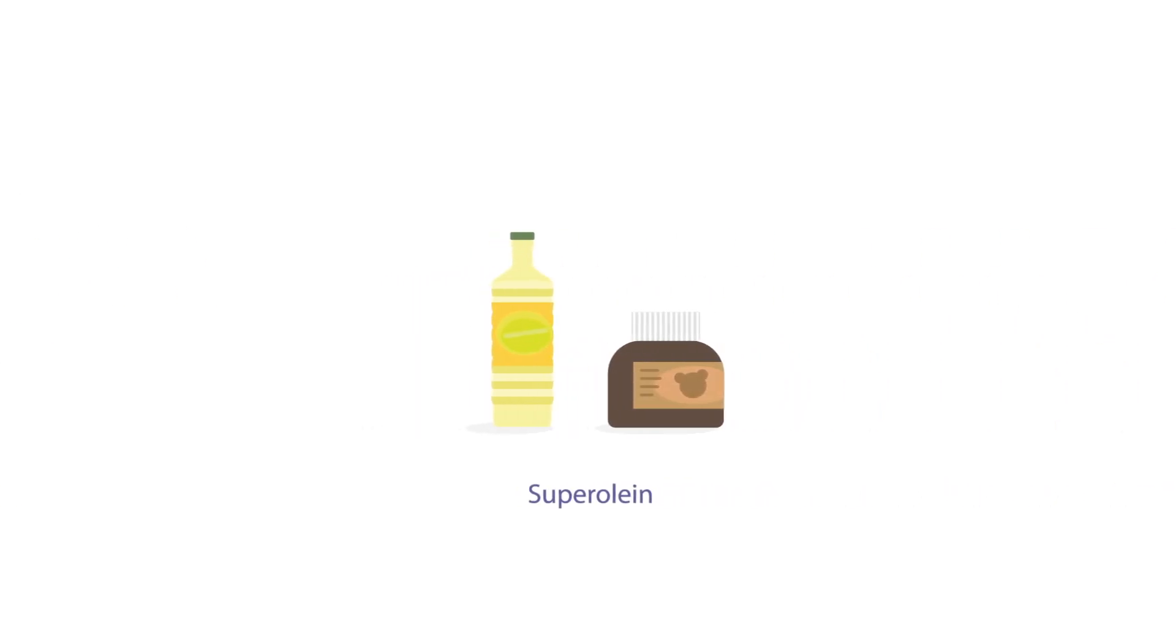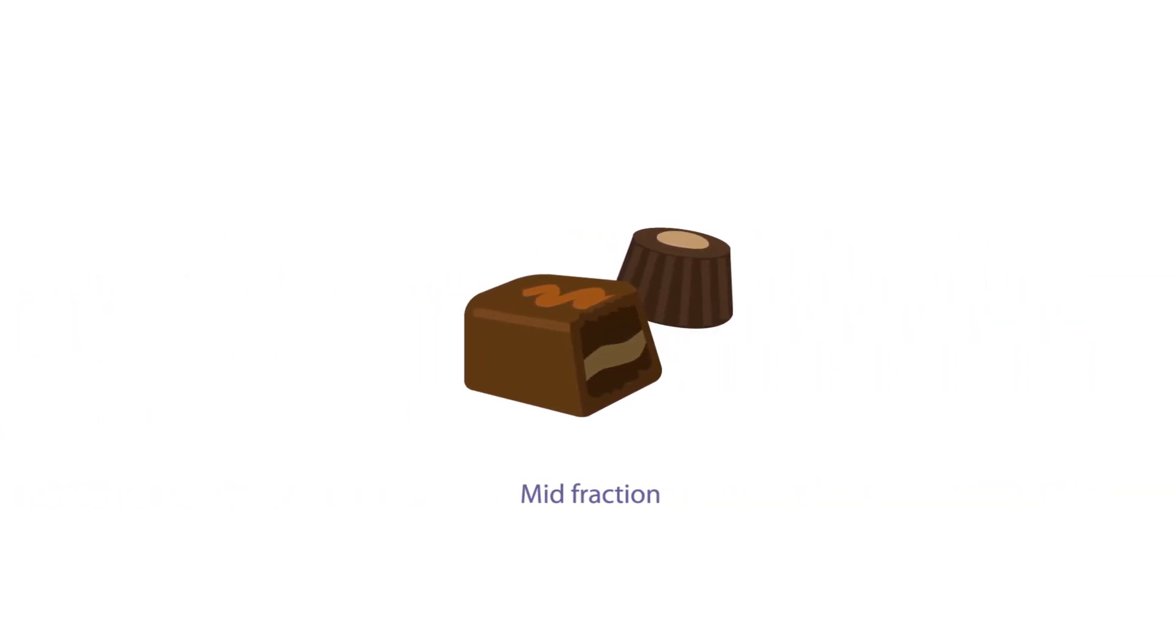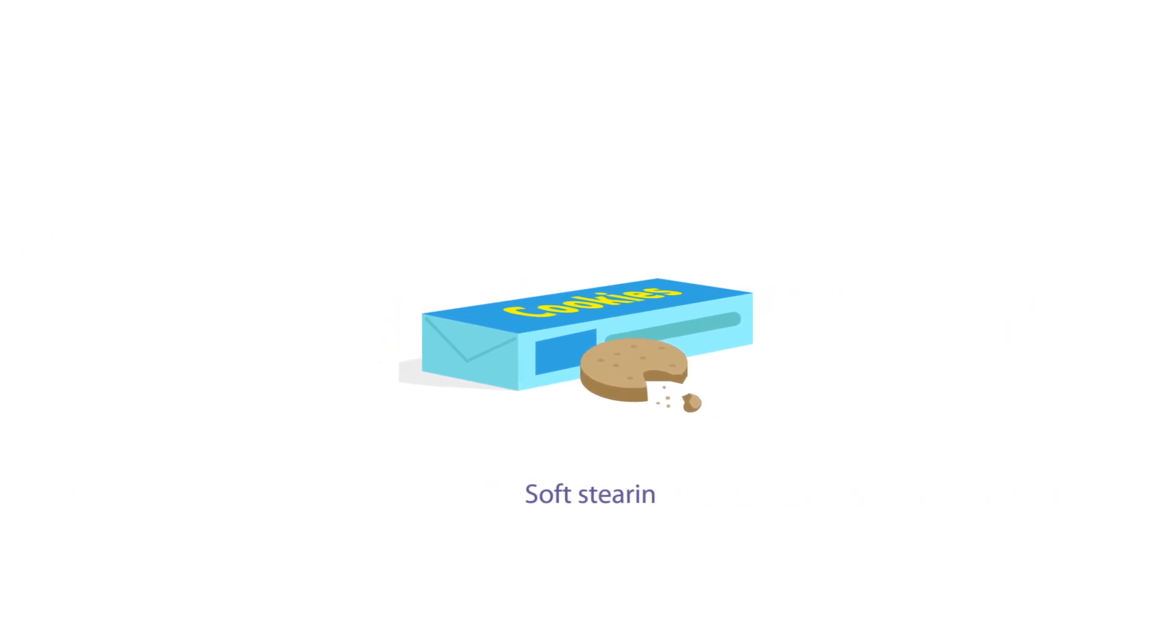Superolein is used as an alternative for liquid oils and among others used in chocolate spreads. The mid-fraction is used to produce filling fats and cream fats. Soft stearin is used to make bakery shortenings.